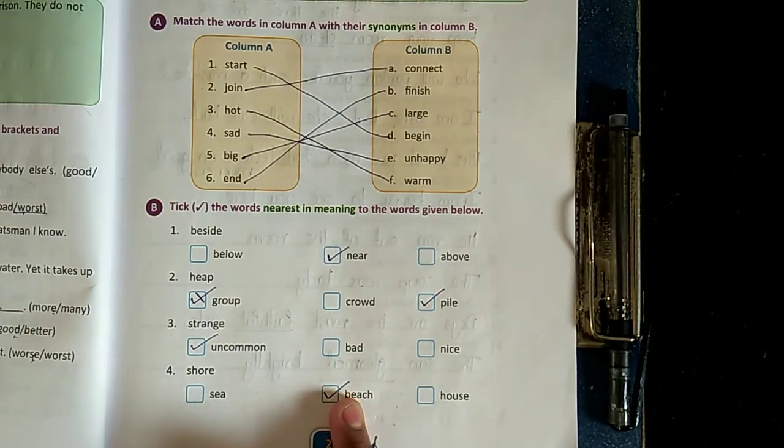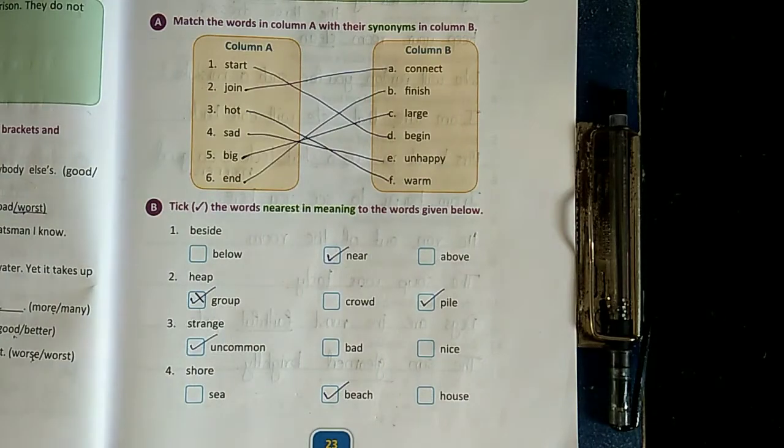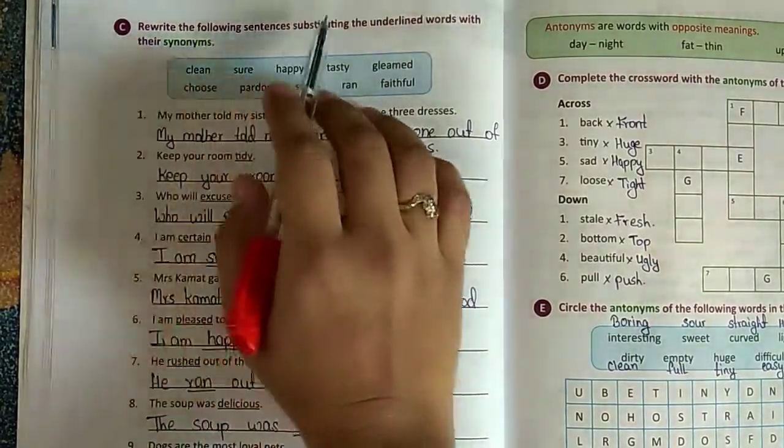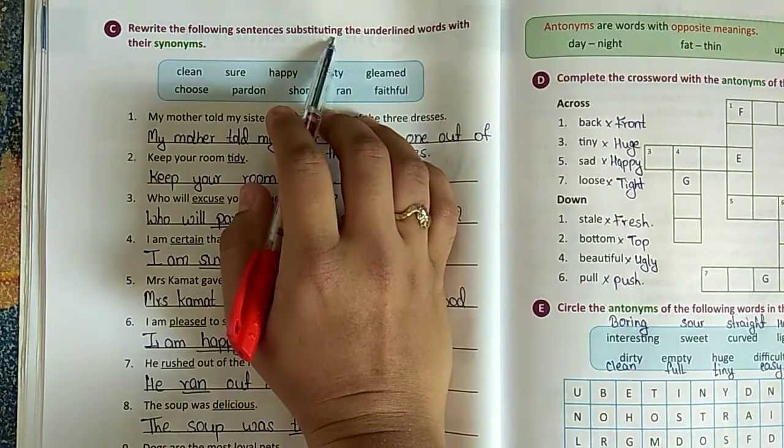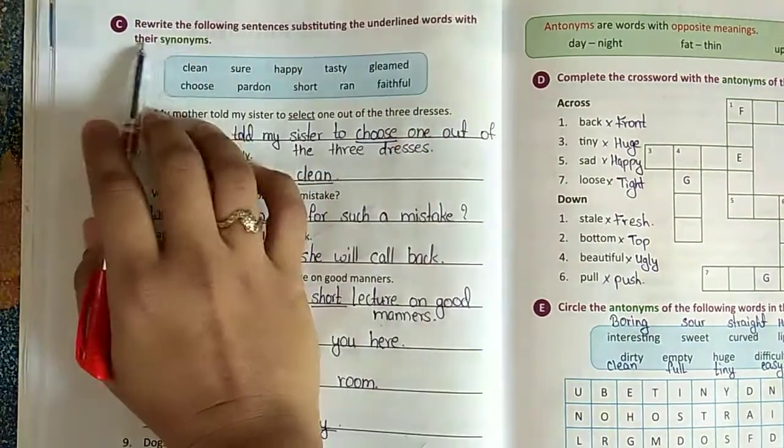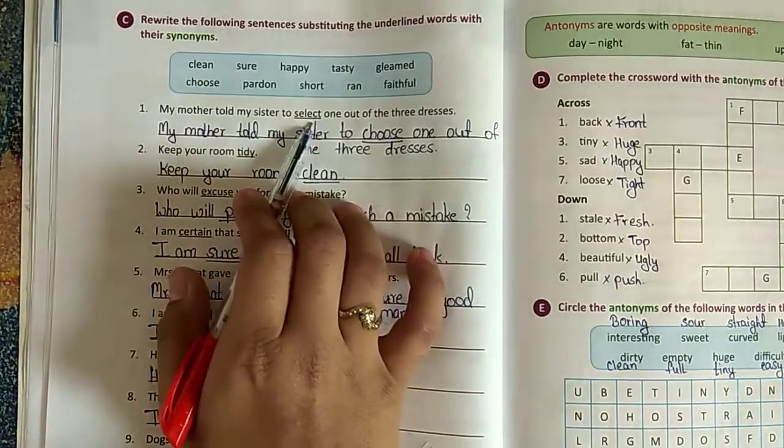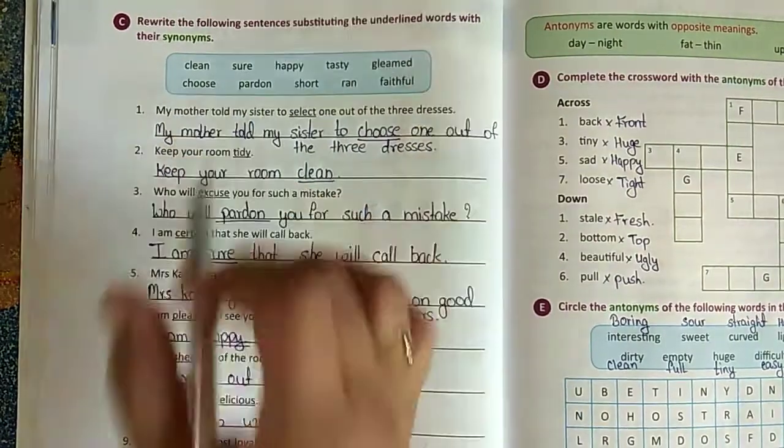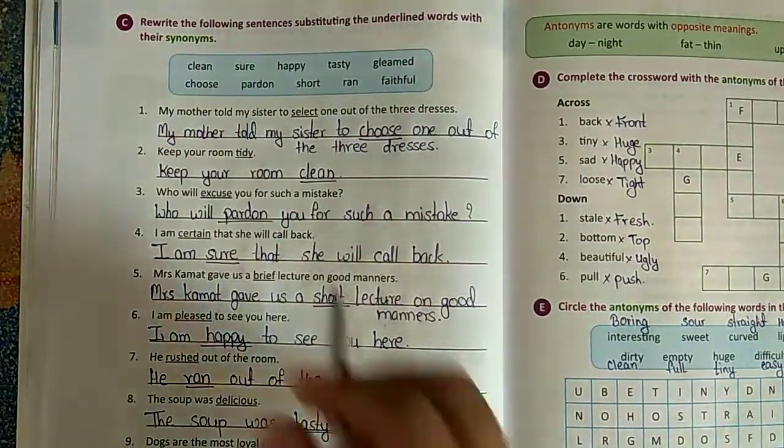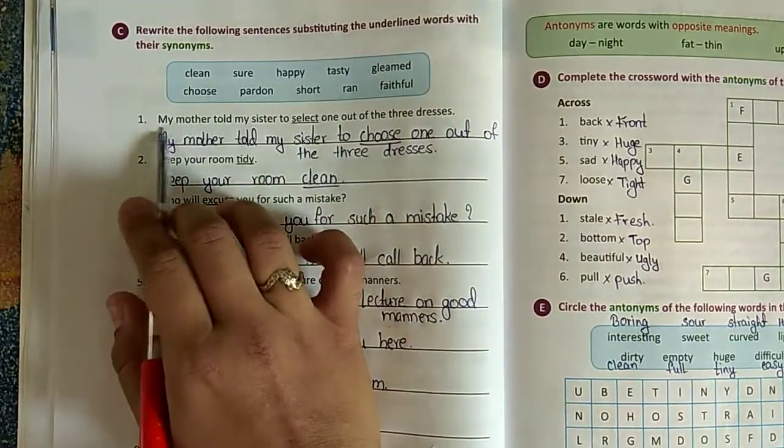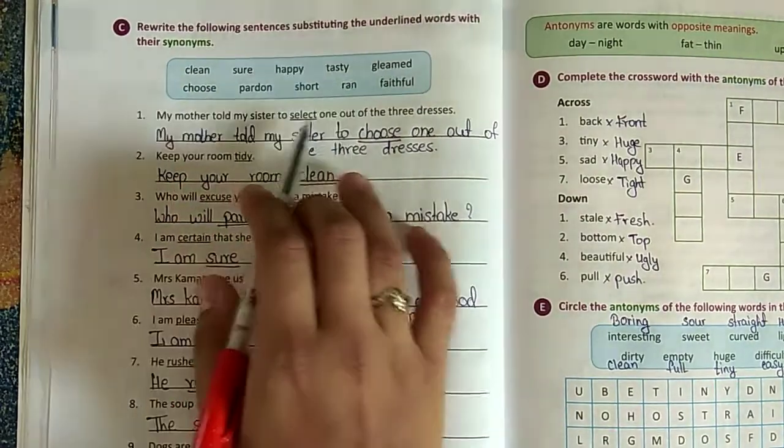Okay, see - rewrite the following sentences, substituting the underlined words with their synonyms. Here underlined words are given in the sentence. We have to change those words with their synonyms, right? And the options are given here.